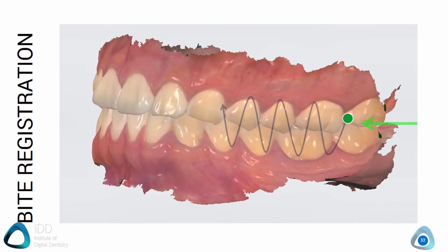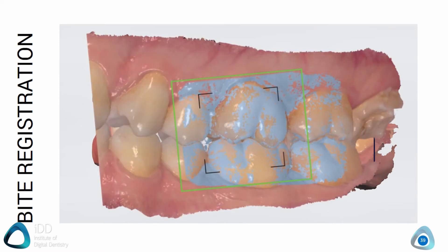Start the bite registration scan and in a zigzag pattern slowly move the scanner to the front, while also tilting the scanner up and down to capture aspects of both the top and bottom buccal gingiva. Once the scan is aligned, the software will let you know — typically by aligning the two arches in real time together. Once your bite registration is done, you have successfully finished your full arch scans.